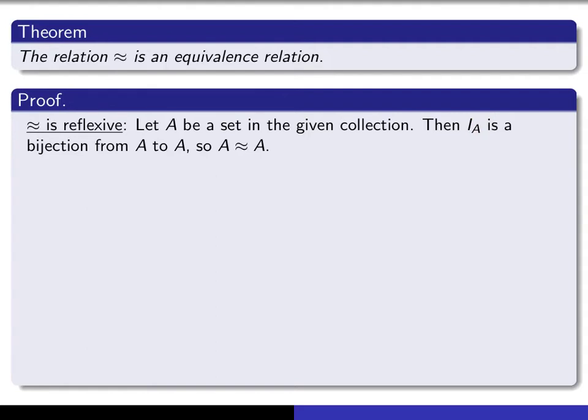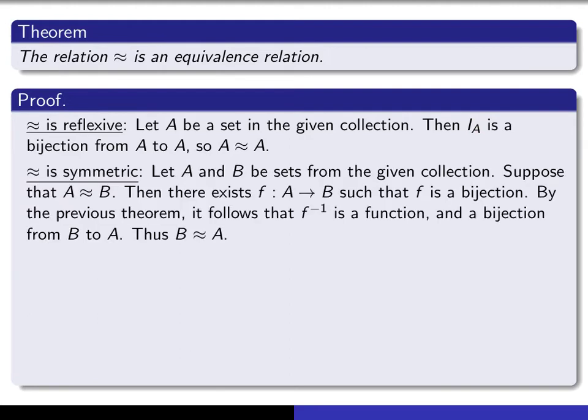Now see if you can prove that it is symmetric. To show that it's symmetric, you give yourself two elements of your underlying collection. You assume that A is related to B, and then you have to deduce that B is related to A. To say that A is related to B is to say that there exists a bijection from A to B. According to the previous theorem, F inverse is then a bijection from B to A, and therefore B is related to A as well.